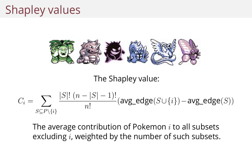And it says, what's that marginal difference? And it weights every subset by how common that subset is. This is the Shapley value — it has a lot of nice properties, and you can go on Wikipedia.